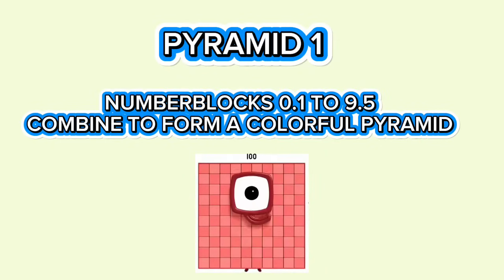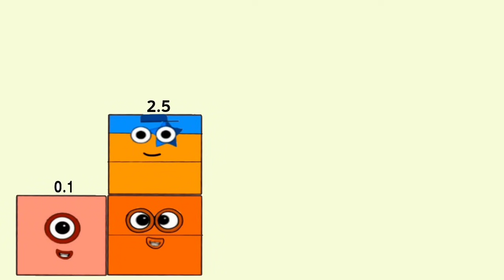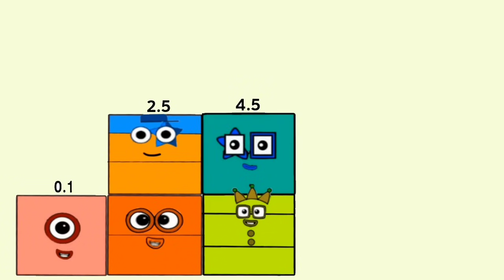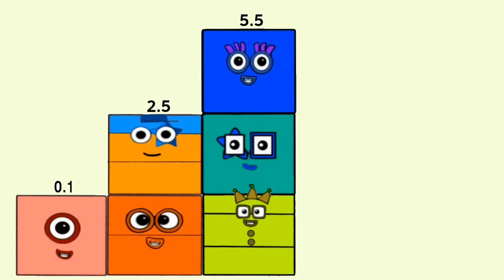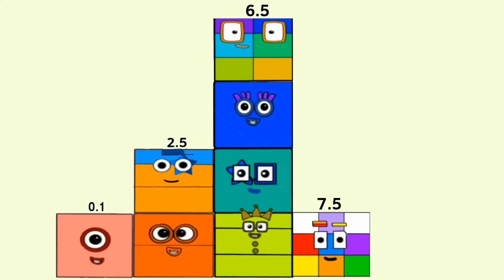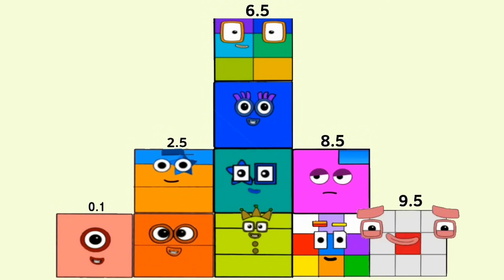Number Blocks 0.1 to 9.5 combine to form a colorful pyramid. 0.1, 1.5, 2.5, 3.5, 4.5, 5.5, 6.5, 7.5, 8.5, 9.5, 10.5.